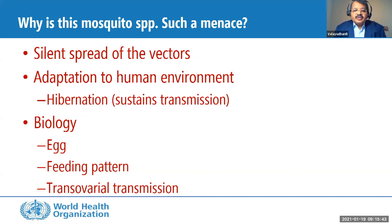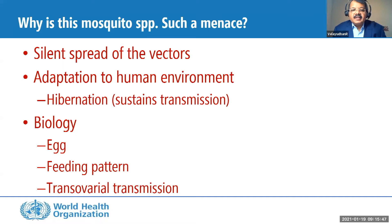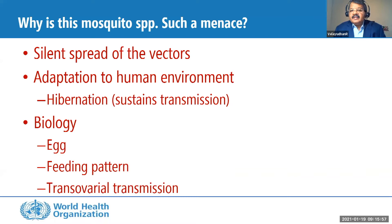The most important distinction between anophelines and Aedes mosquitoes is their biology. There are three key aspects: first, the egg; second, the feeding pattern; and third, the transovarial transmission of the virus.